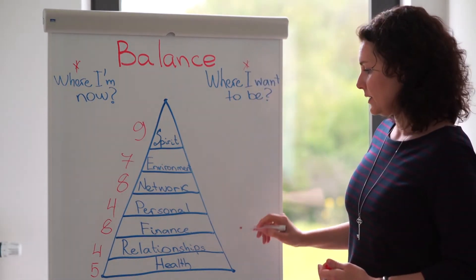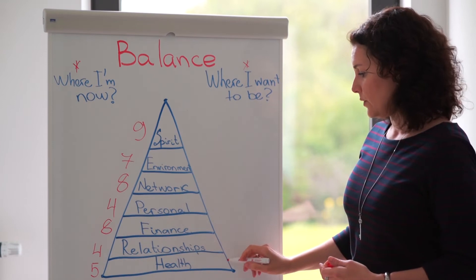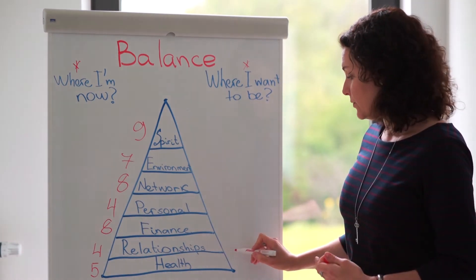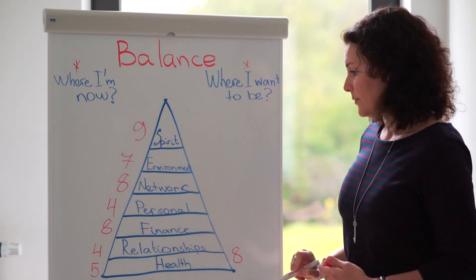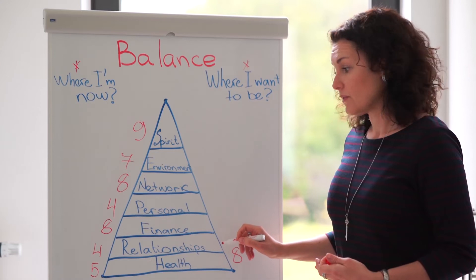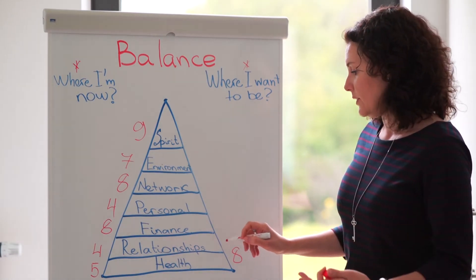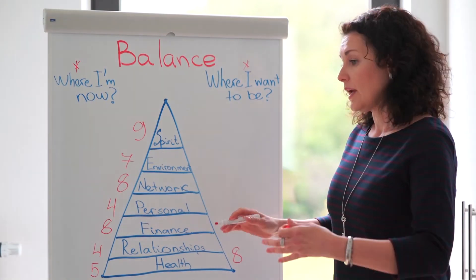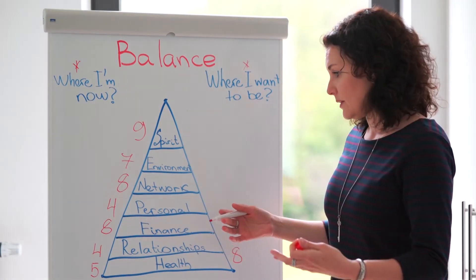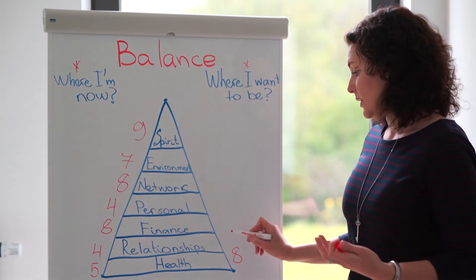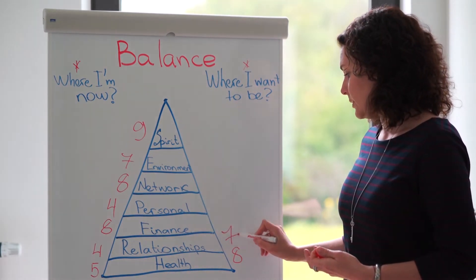Where do you want to be next year in terms of your health? Maybe you want to really make an improvement. So you put eight. In terms of your relationships, if you are single and you want to find a partner or maybe you had an ongoing conflict that you want to resolve, and you really want to make this quality change in your relationships, you might want to put seven here.